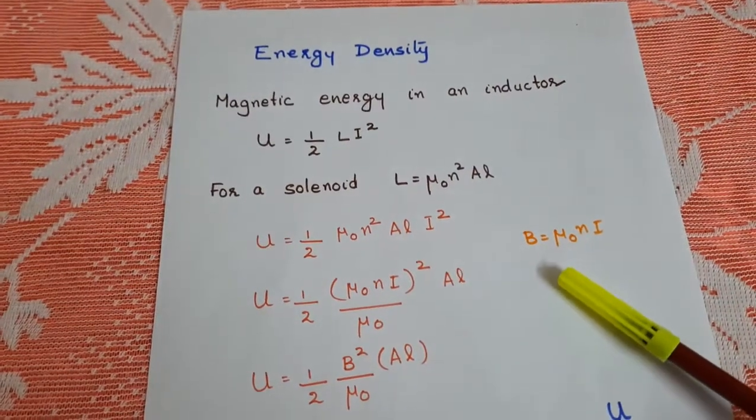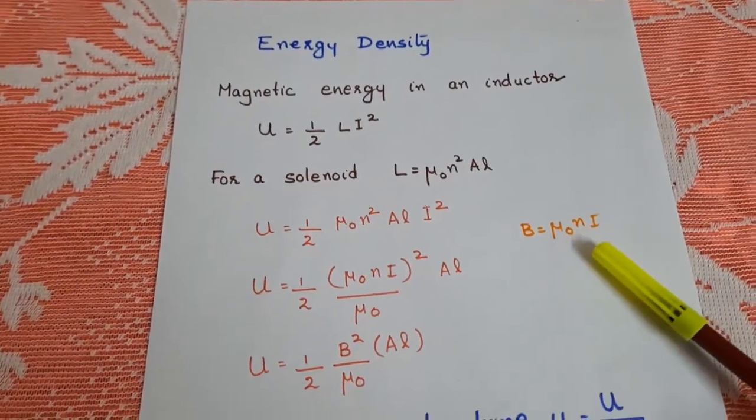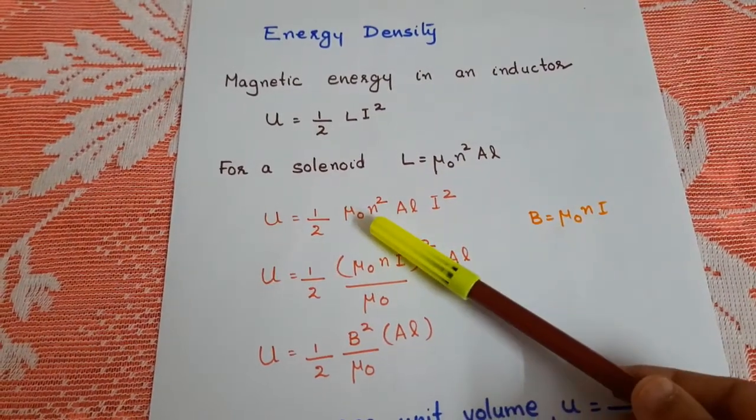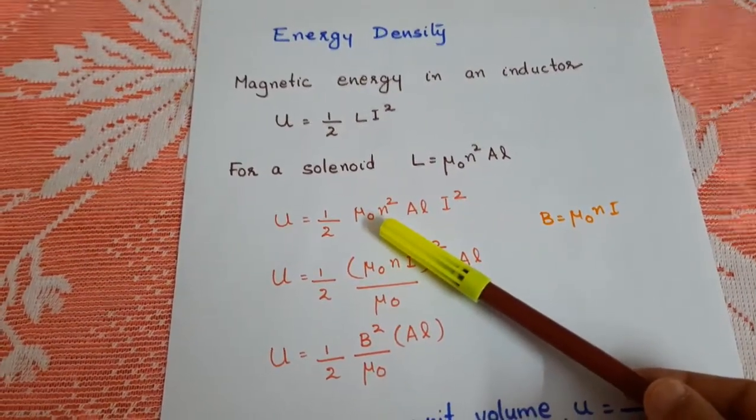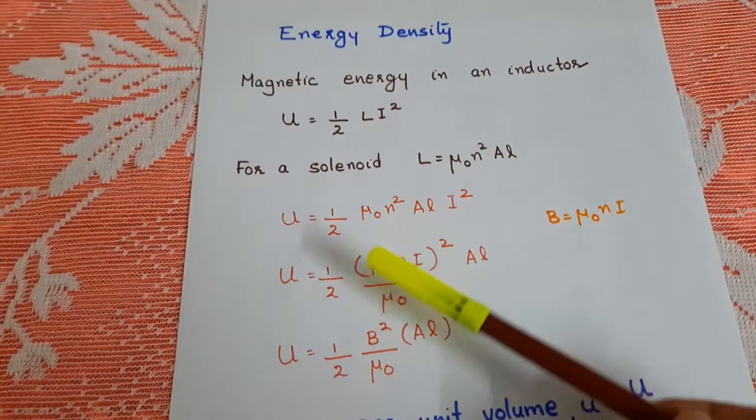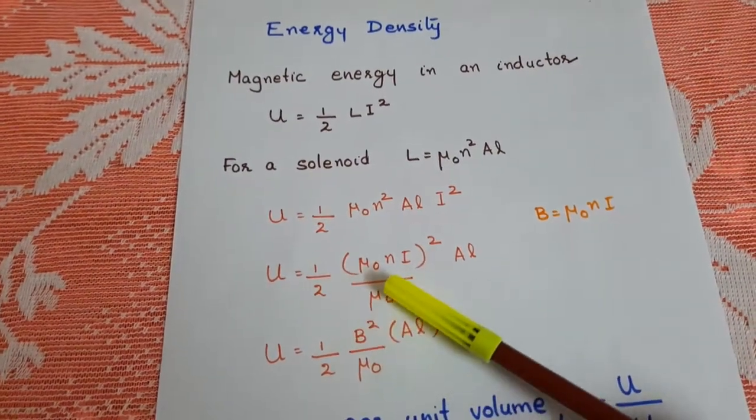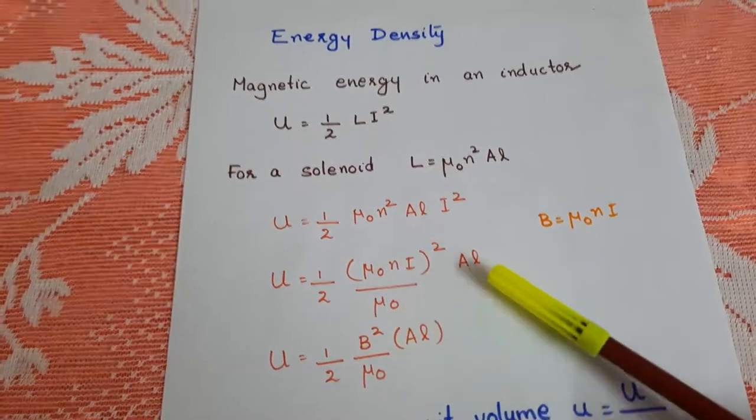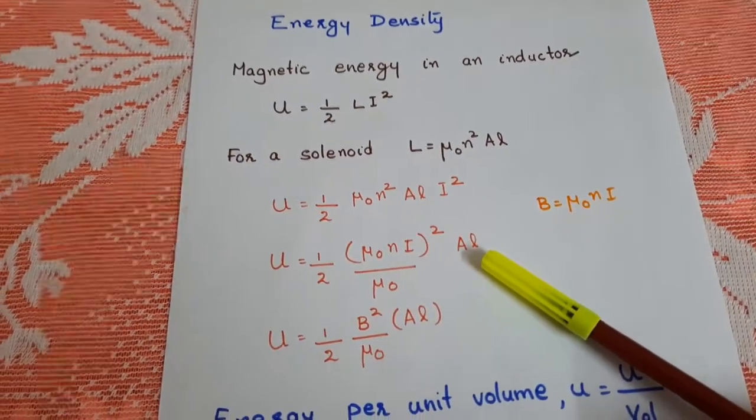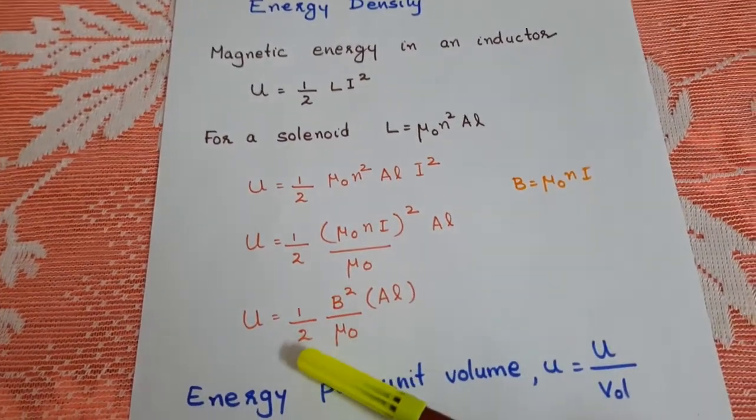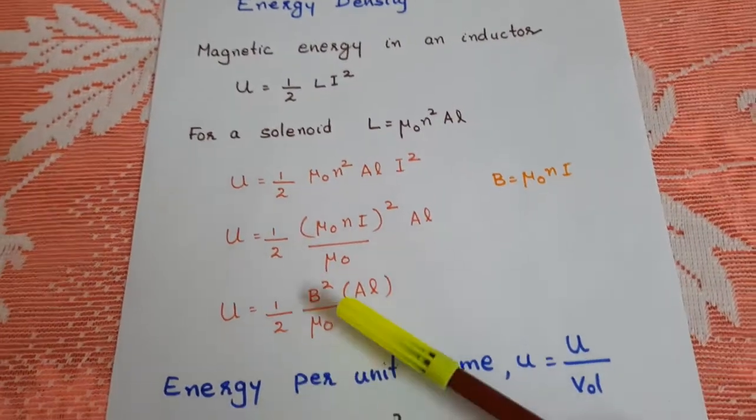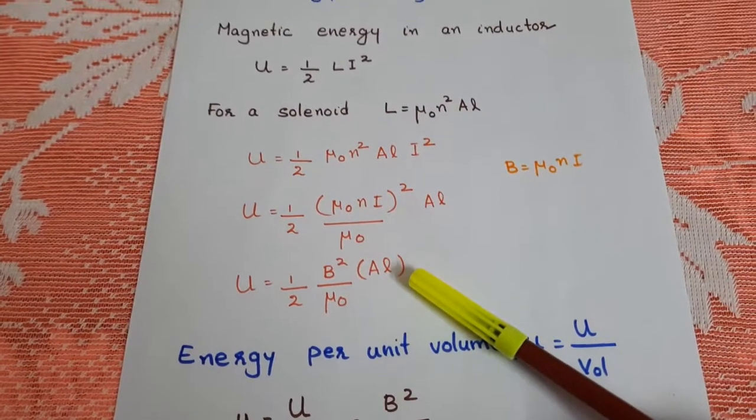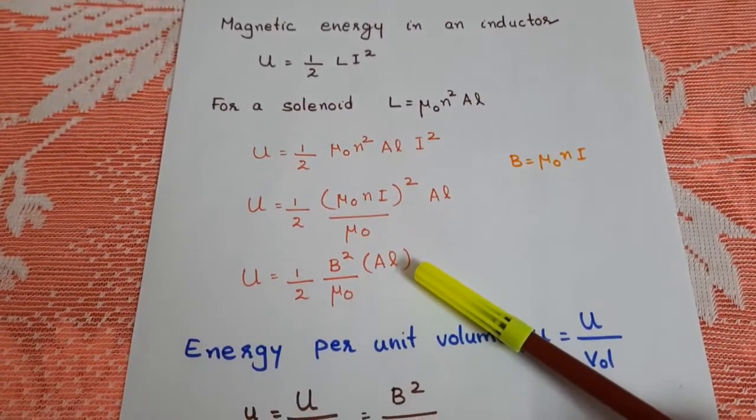But the magnetic field inside a solenoid is mu0 N I. So let us multiply and divide this equation by mu0. So half into mu0 N I the whole square by mu0 into A L. So the potential energy is half B square by mu0 into A L, where A L is the volume of the inductor.